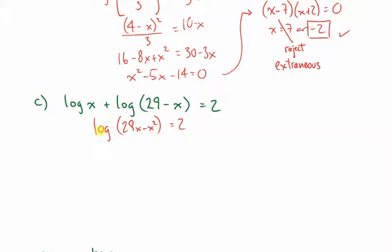Next, I'm going to think of a log as an equivalent exponential. The base on this is 10. The exponent is 2. And it's equal to the argument of the log. Again, I have a quadratic. Let's gather all the terms to one side. I like to gather it to the side where x squared is positive. 10 squared is 100. Let's see if I can factor this.